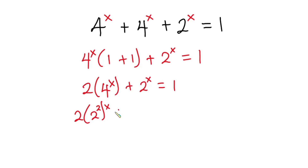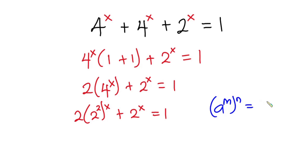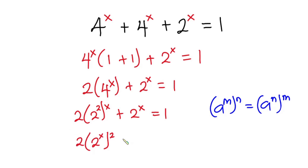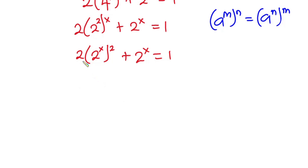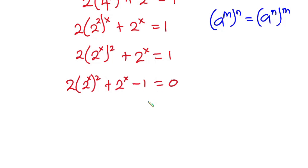From here, 2 times 4 is the same as 2 times 2 squared, so we have 2 times 2 to the power 2x, plus 2 to the power x, equal to 1. From indices, a to the power m·n is the same as a to the power n, then m. Applying that idea, we get 2 times (2 to the power x) squared, plus 2 to the power x, equal to 1. Now let's set everything equal to zero: 2 times (2 to the power x) squared, plus 2 to the power x, minus 1 equals 0.